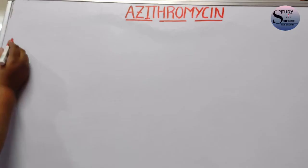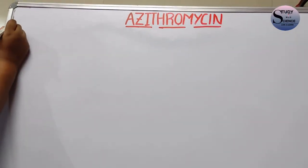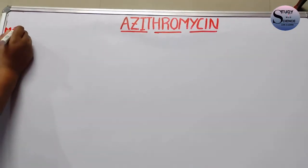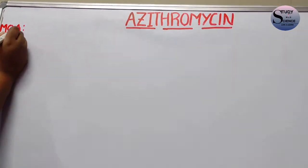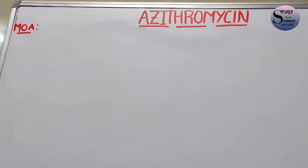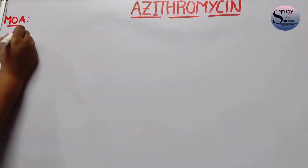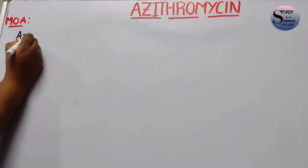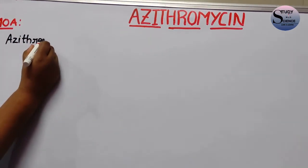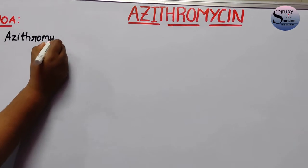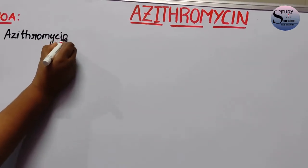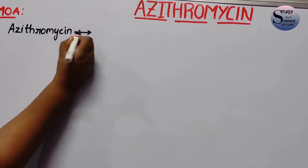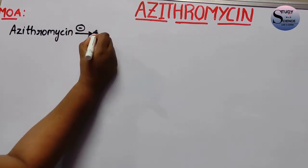Now we are going to discuss about the mechanism of action of Azithromycin. Azithromycin mainly acts by inhibiting the protein synthesis of the bacteria. We are now going to discuss about how this inhibition of protein synthesis happens in the bacteria.